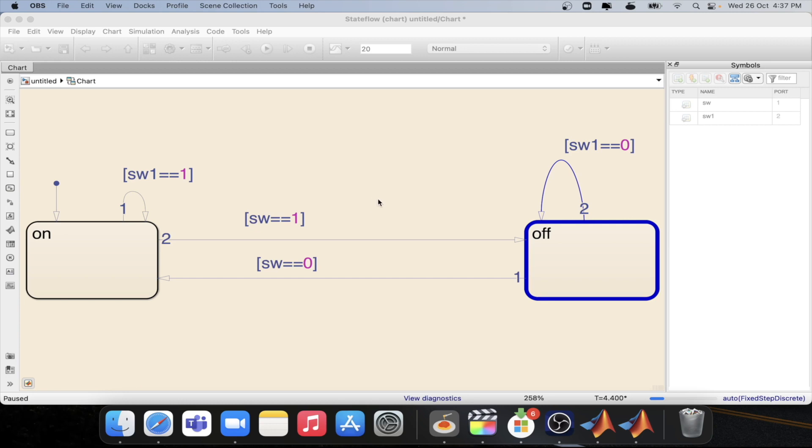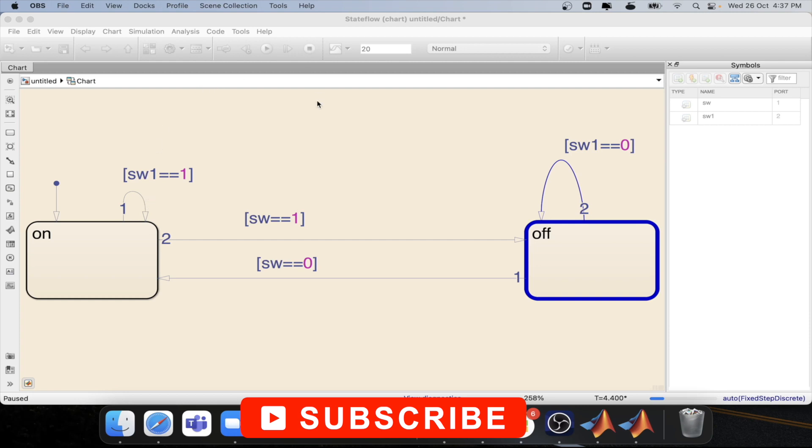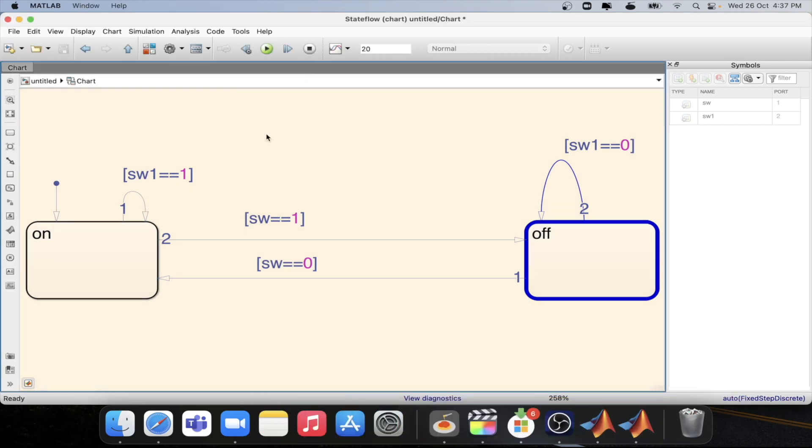So let's look into the same. As in the last tutorial we have seen that we can build self-transitions. Now let's use those self-transitions to do some operations. In this case we will be defining an entry condition which we have seen in the last tutorials. In case you want to see them please refer to our playlist.